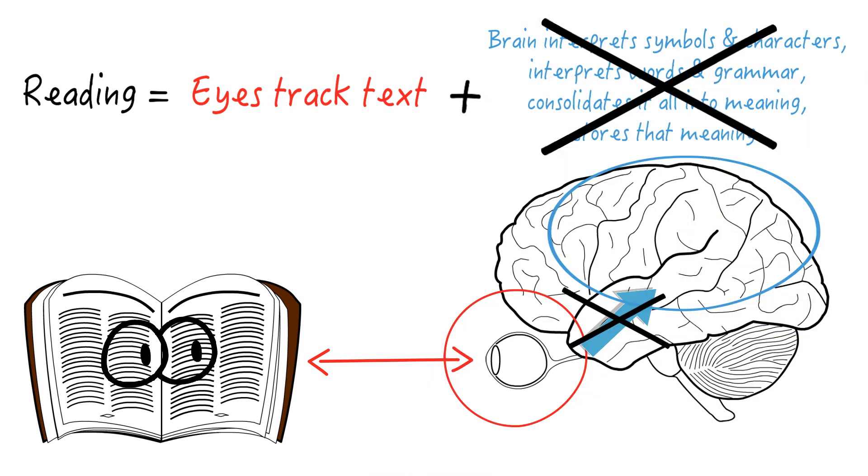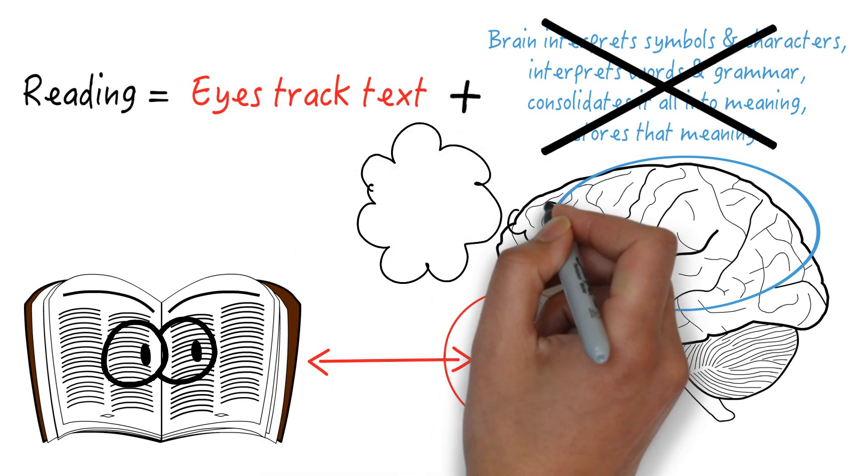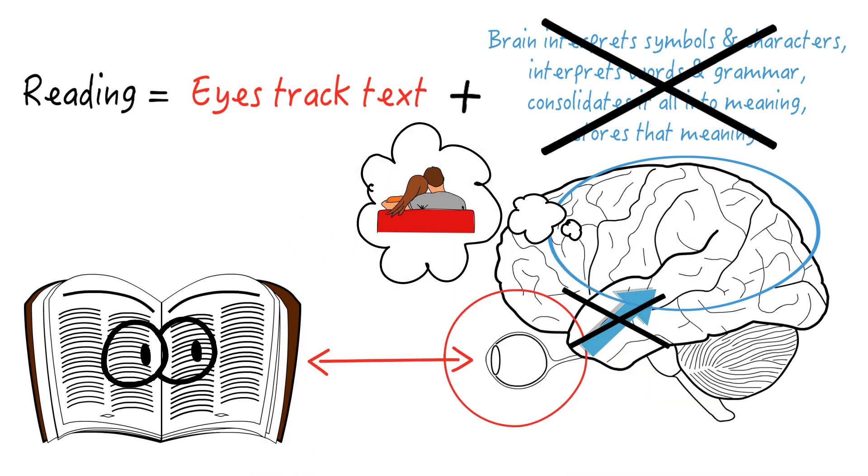So the eyes will keep reading, but the other part of your brain that was previously assimilating the information you were reading is now busy with other thoughts. Every part of your brain can only do one task at a time. Each part can do a different task, but they have to work together for complex tasks.